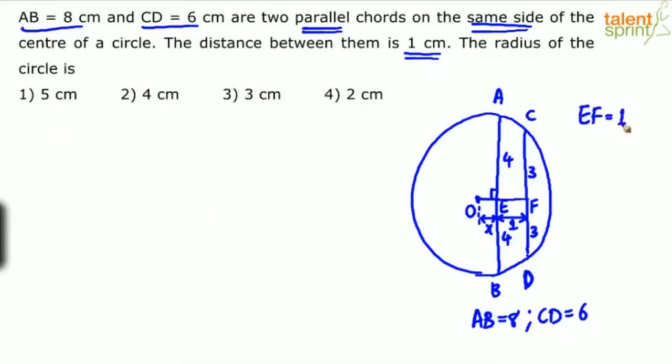O to F, the distance will be X plus 1. EF is equal to 1 centimeter. O E is equal to X, so O F will be X plus 1. Now try to draw the line representing the radius from the center. This is R. And similarly, if you draw O C, this also is R.